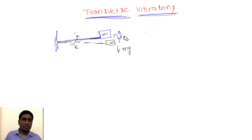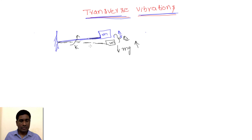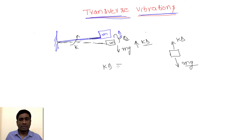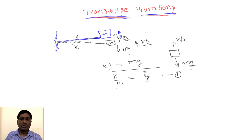The stiffness k is trying to oppose this initial displacement, acting in the upward direction. The stiffness force formula is the same as in longitudinal vibration: stiffness force equals k times δ. At the equilibrium position, the stiffness force acts upward and the inertia force acts downward. Equating these two: k·δ = m·g, or k/m = g/δ. This is an important equation to remember.